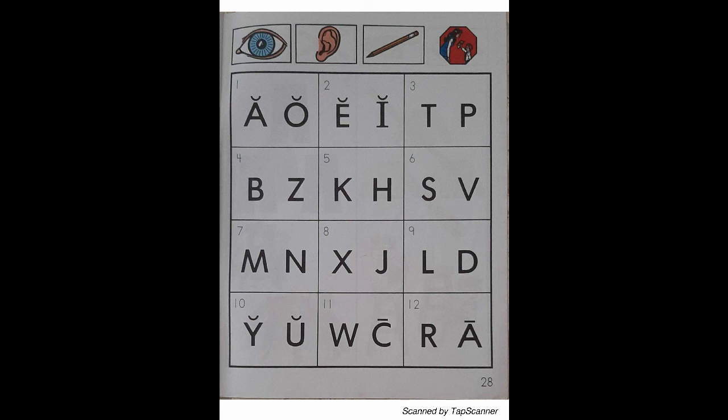Look at the letter in box 2. Listen as I say the sound of the letter: "eh" — interim — "eh". With your pencil, circle the letter that reads "eh".